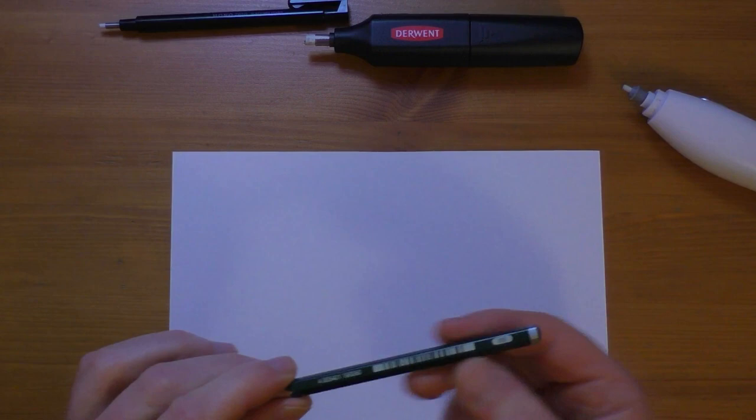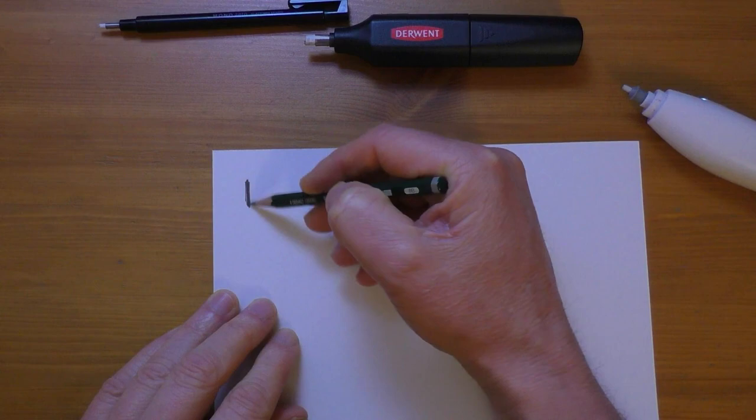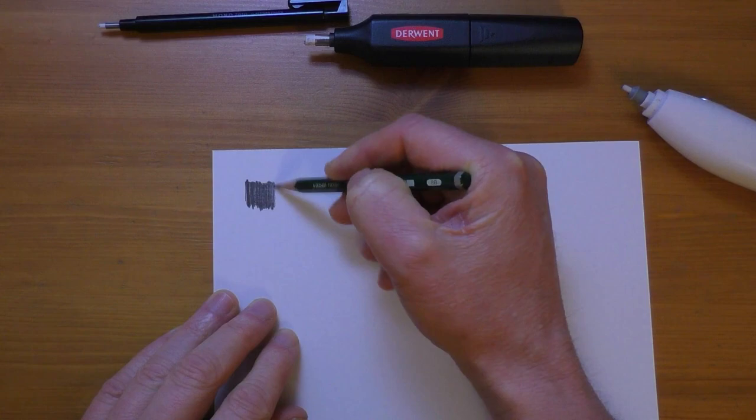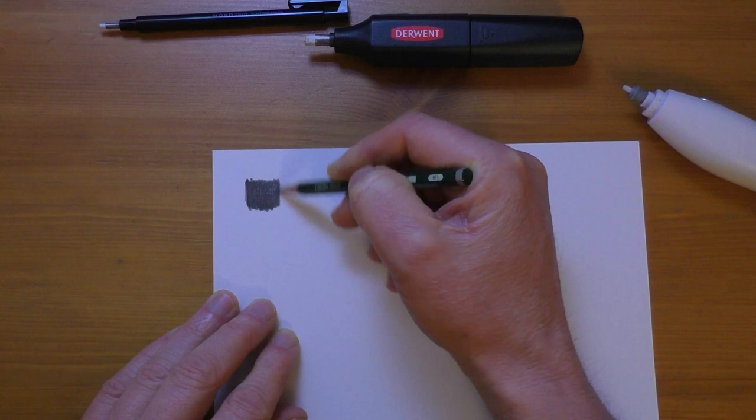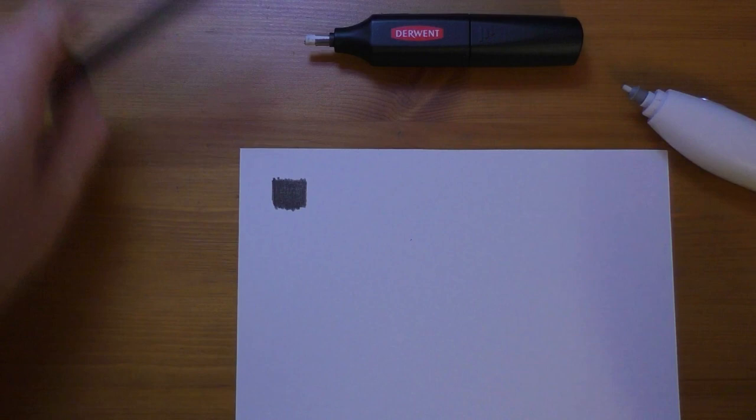I'm just going to draw out a little swatch there and I'm going to press quite hard and really fill the grain of the paper. Now if you've ever tried to erase out 8B graphite before, you know that you can't get back to clean white paper. It's very tricky to erase.